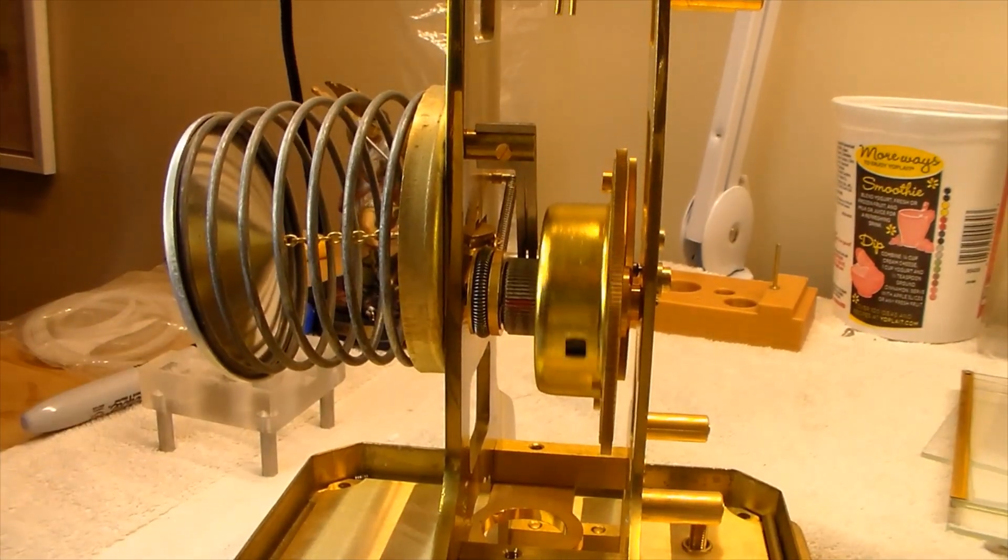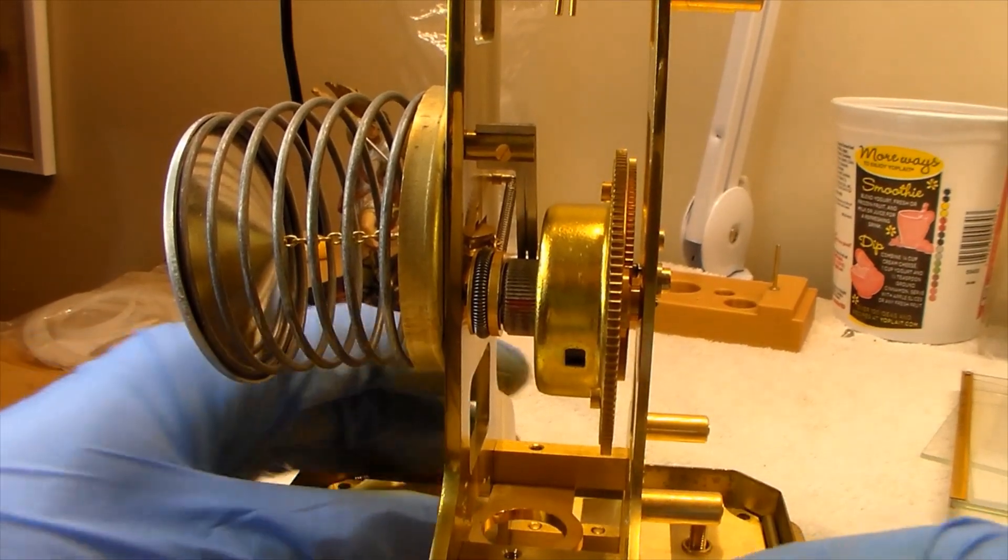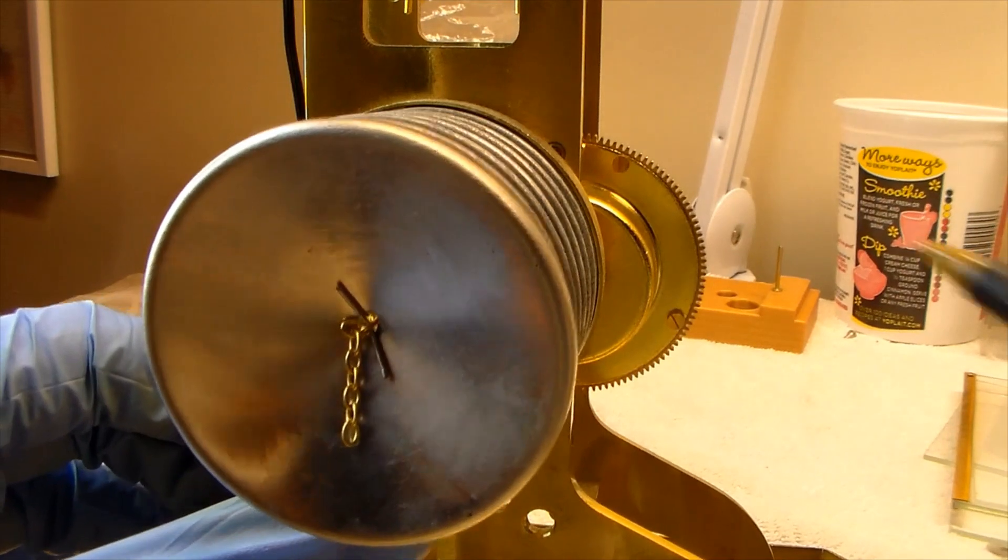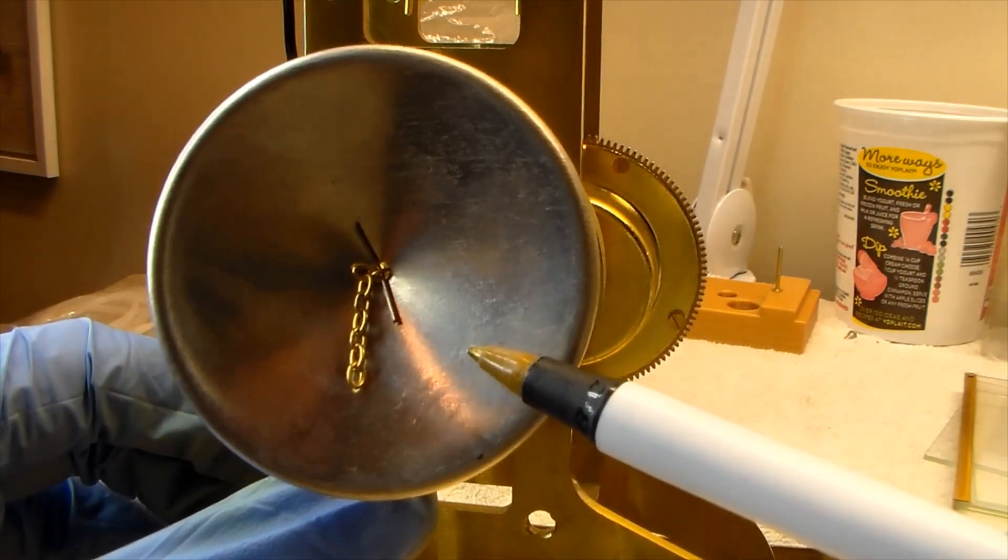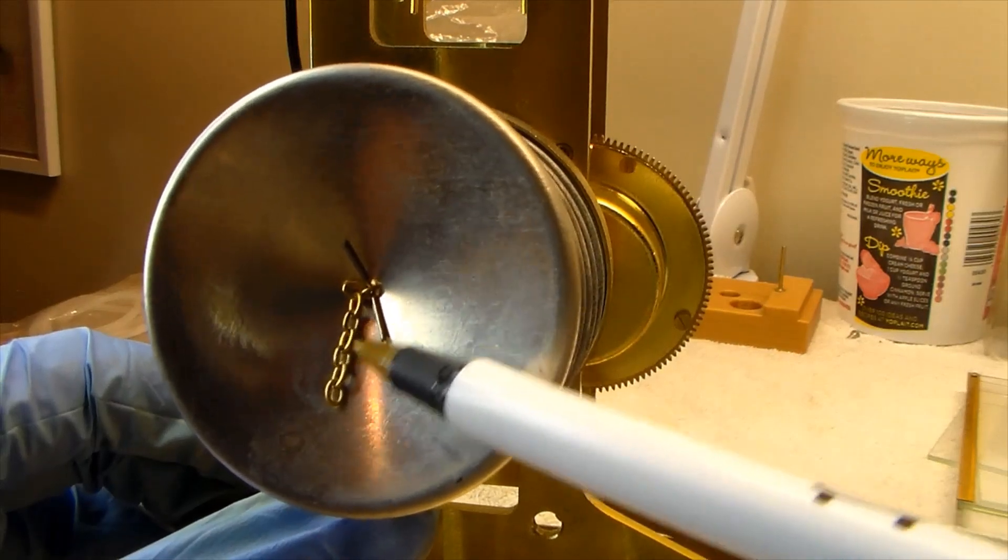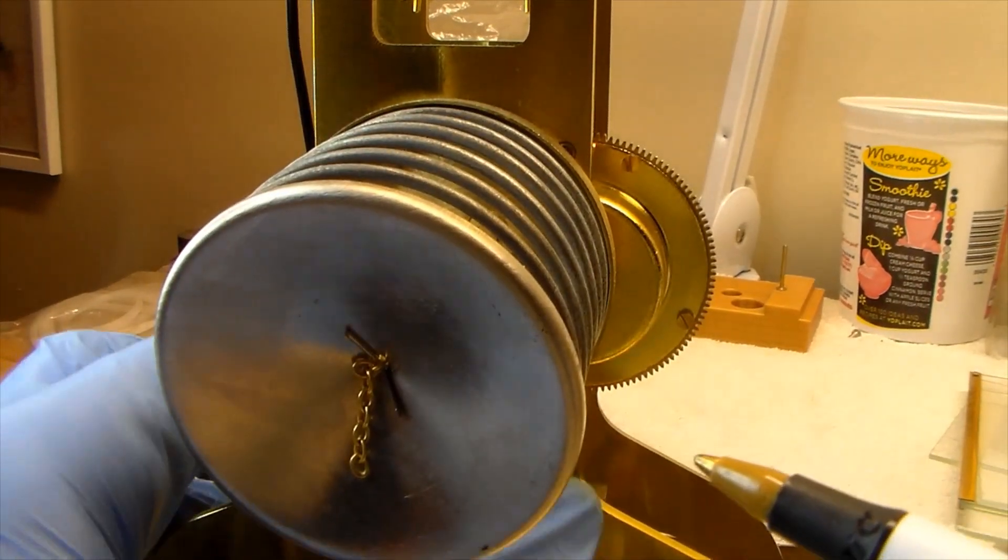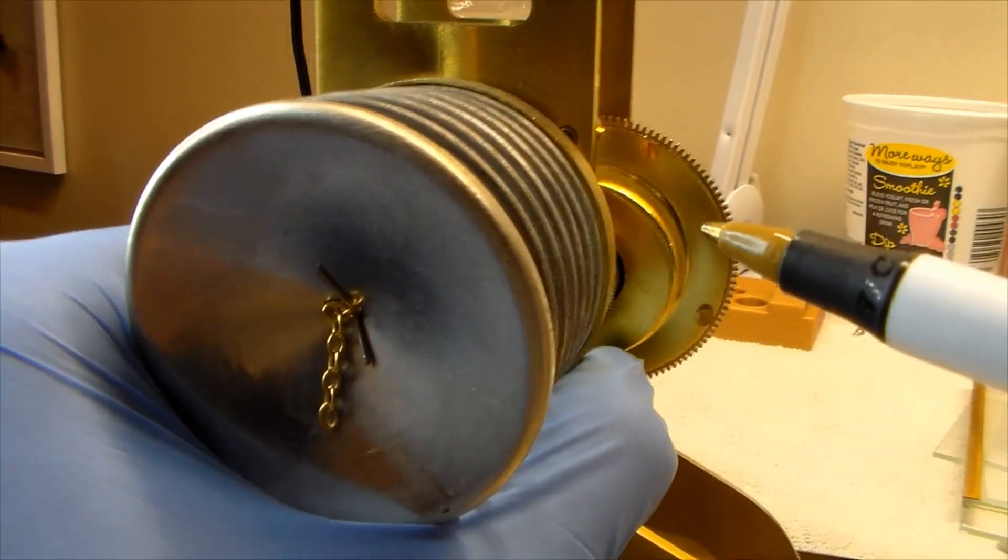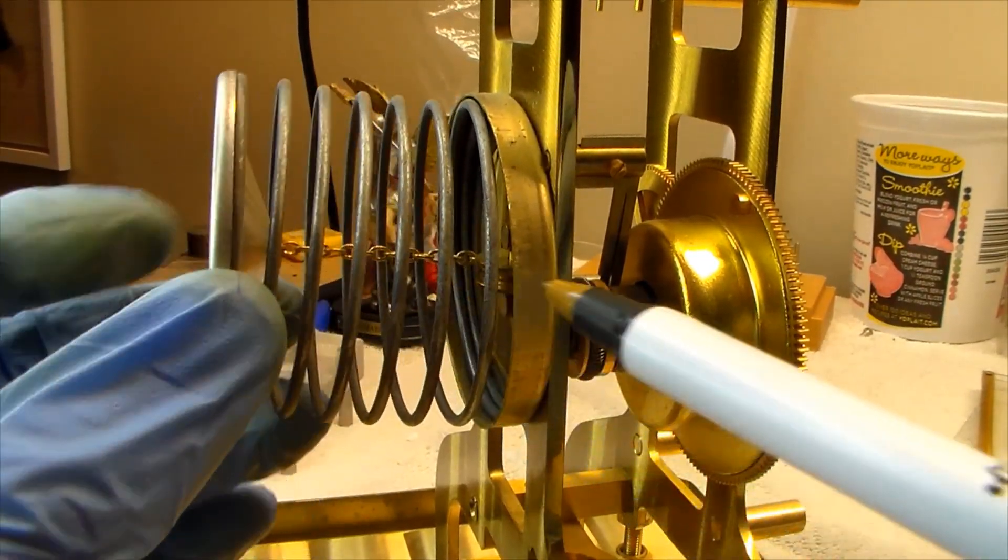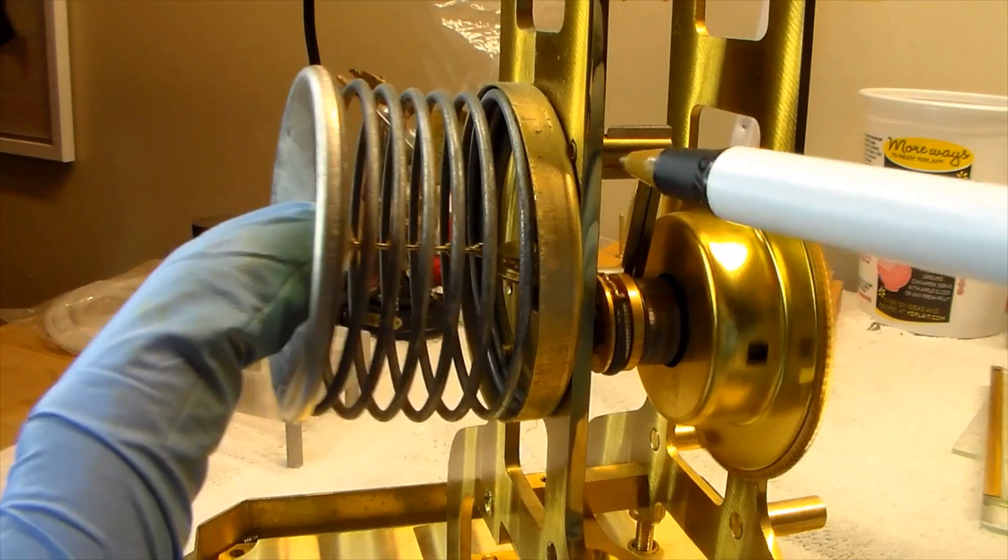So let's start off here with some parts identifications. First and foremost here we have the spring guide which is this plate here. We have the chain. As you can see the end of it here where it's stopped with the chain stopper.